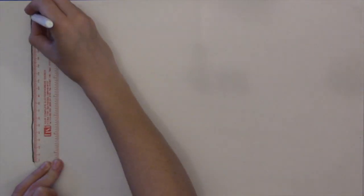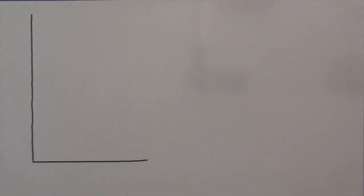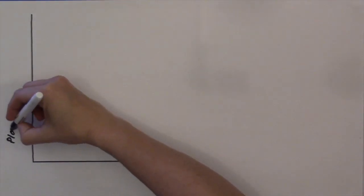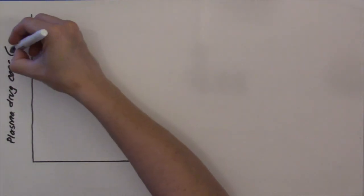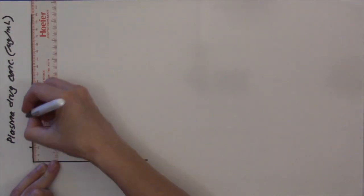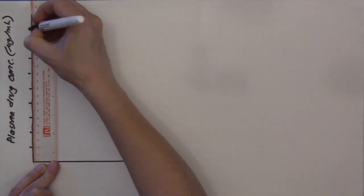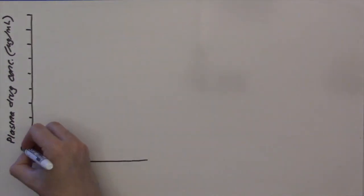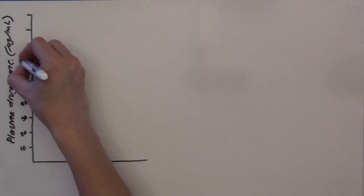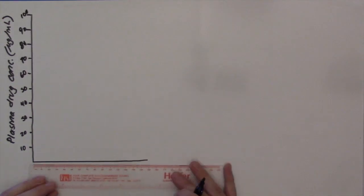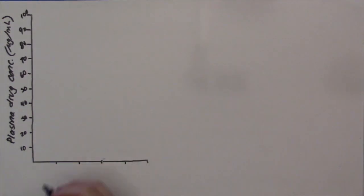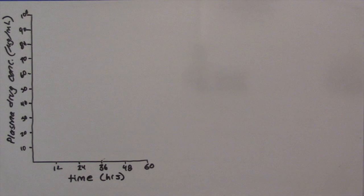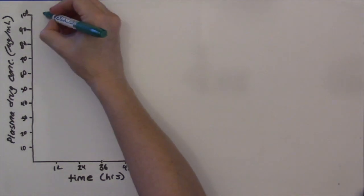Let's look at first-order kinetics. On the y-axis, we'll show the plasma concentration of the drug, and we'll put this on an arithmetic scale. On the x-axis, we'll plot the time after drug administration, also on an arithmetic scale.